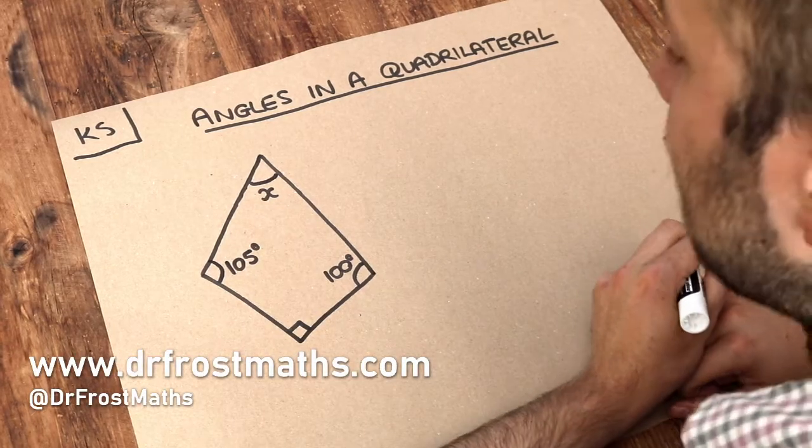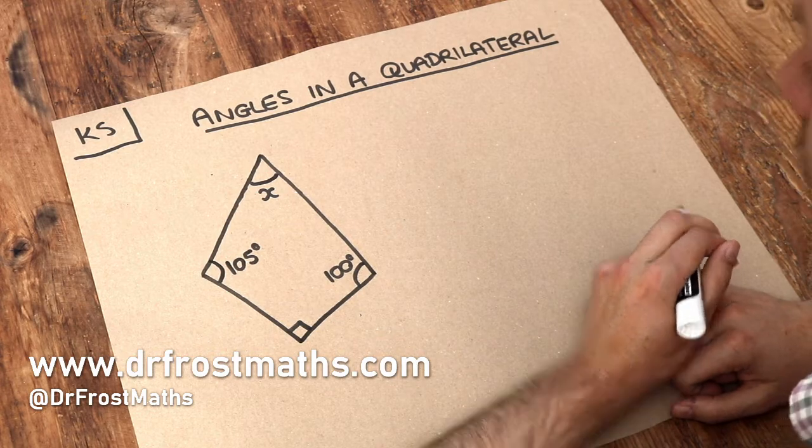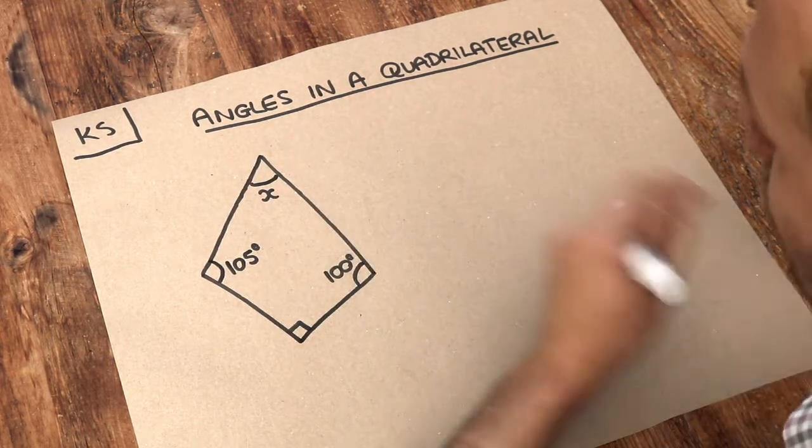Hello and welcome to this Dr. Ross Math's key skill video on angles in a quadrilateral. Now a quadrilateral is just a 2D shape with four sides, quad meaning four, like quad bike.